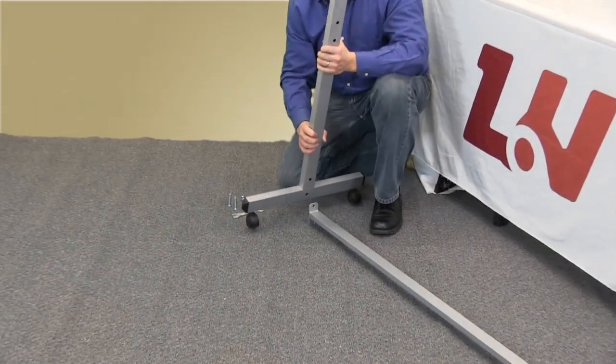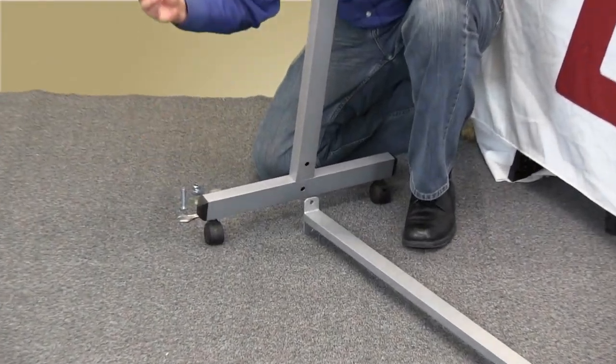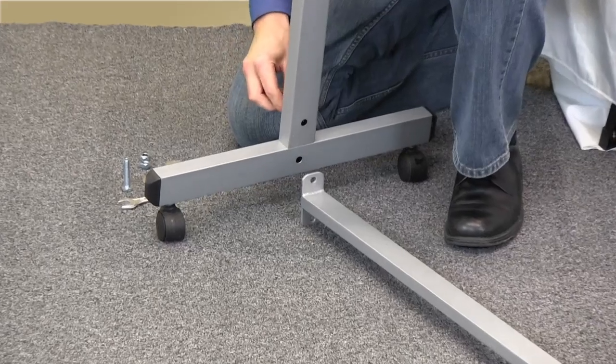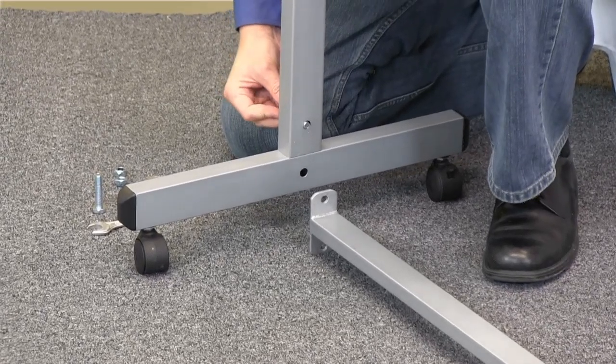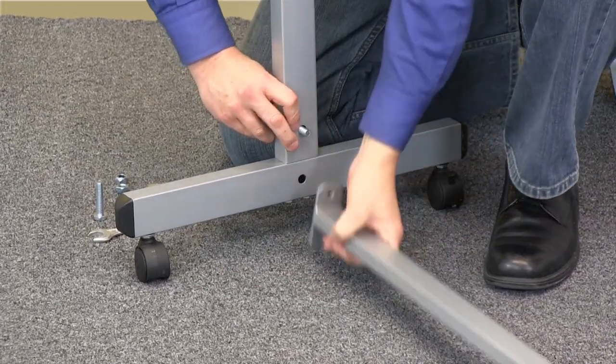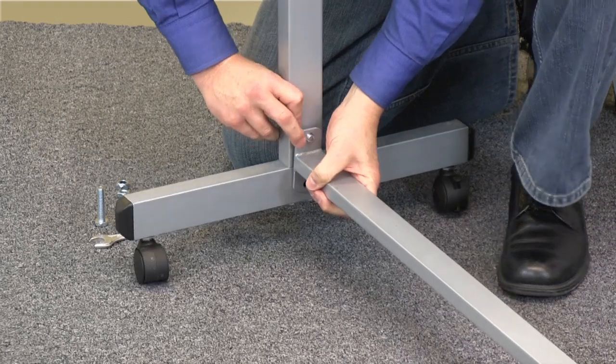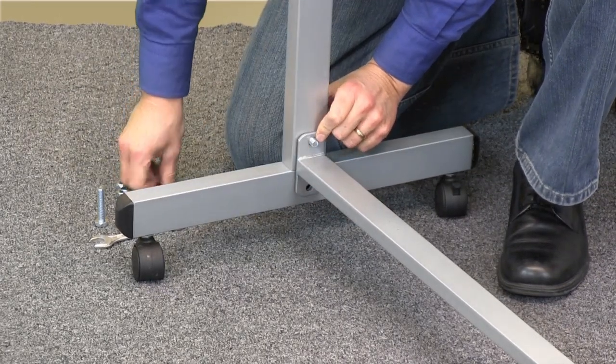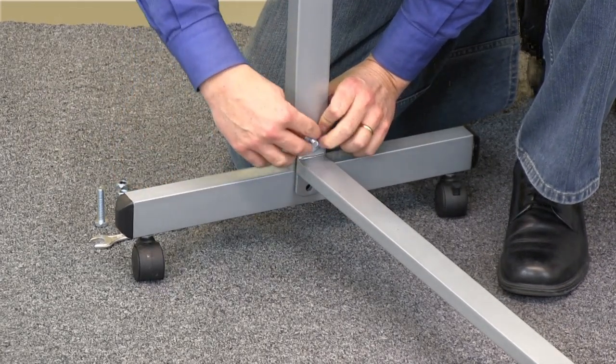Once you've finished assembling both sides, take the lower bottom support and position it next to one of the fully assembled supports. Insert the bolt through the hole on the vertical support.